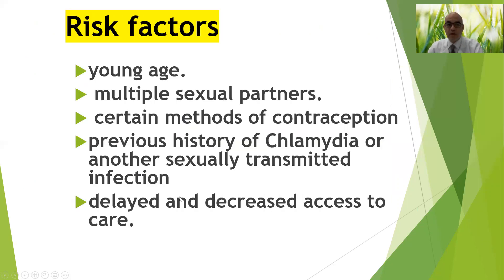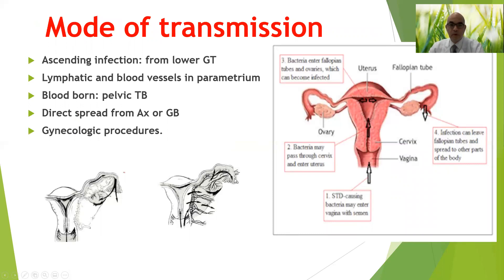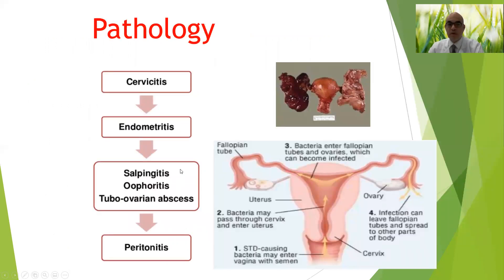Risk factors for PID include young age, multiple sexual partners, certain contraceptive methods including intrauterine contraceptive devices, previous history of chlamydia or another sexually transmitted infection, and delayed or decreased access to care. Transmission is by ascending infection from the lower genital tract, lymphatic or blood-borne spread, direct spread from the appendix or gallbladder, and some gynecologic procedures. The ascending infection progresses from cervicitis to endometritis, myometritis, salpingitis, oophoritis, tubo-ovarian abscess, and finally peritonitis.